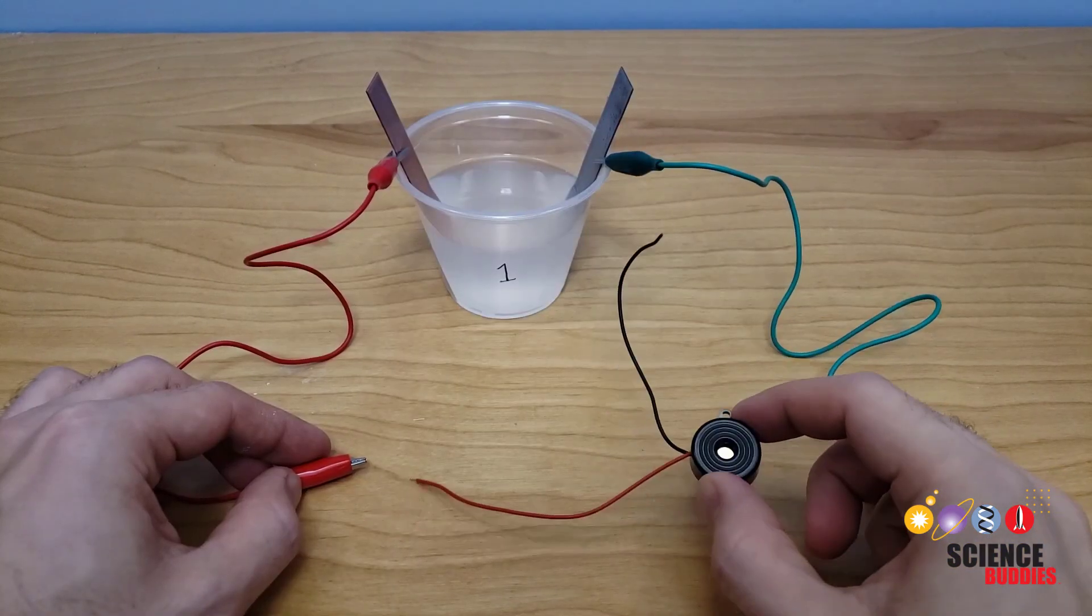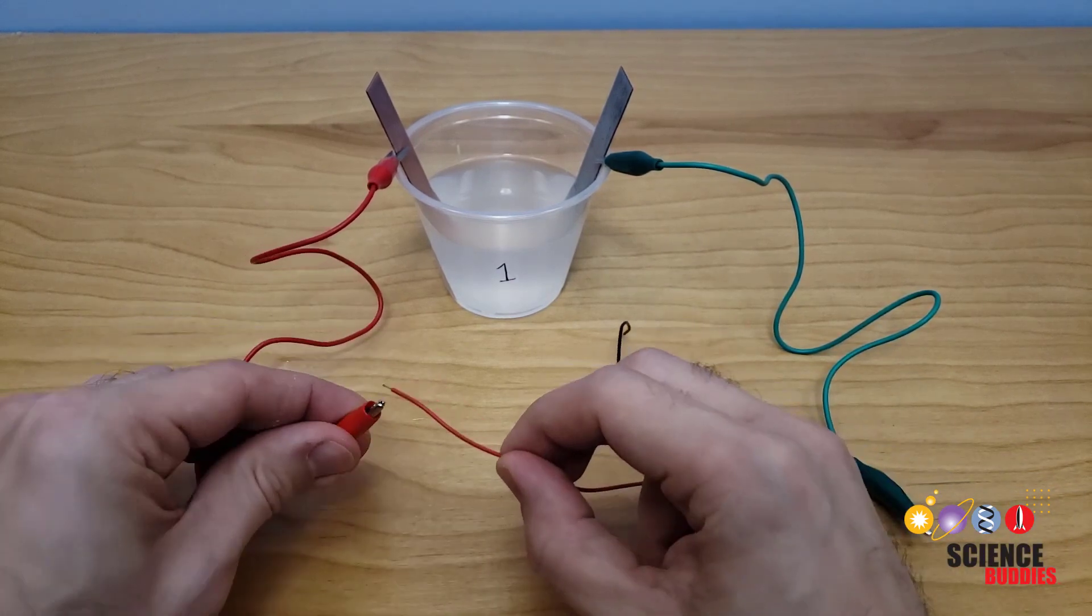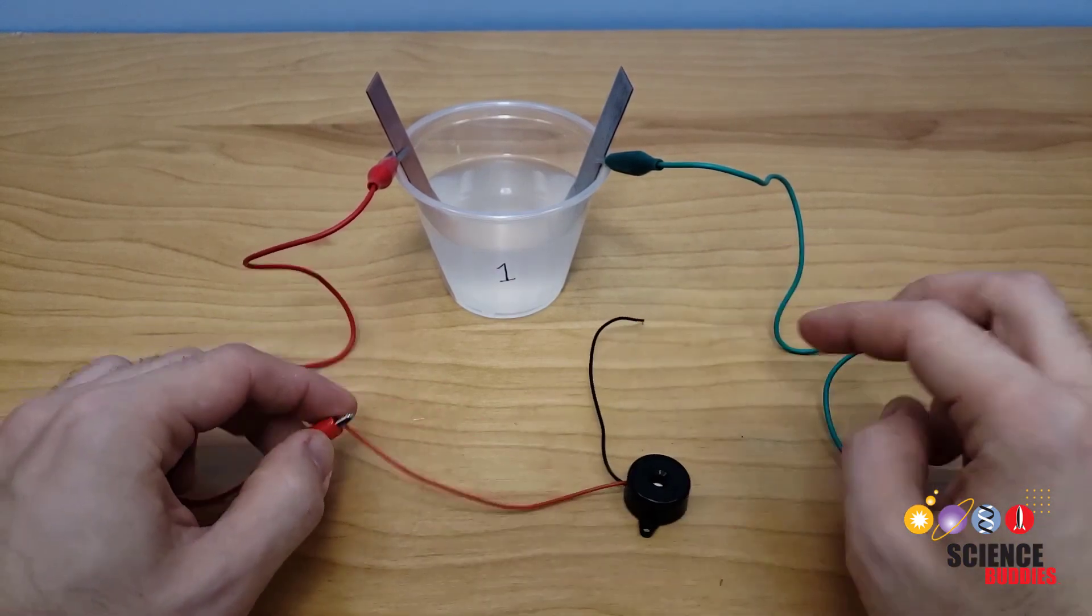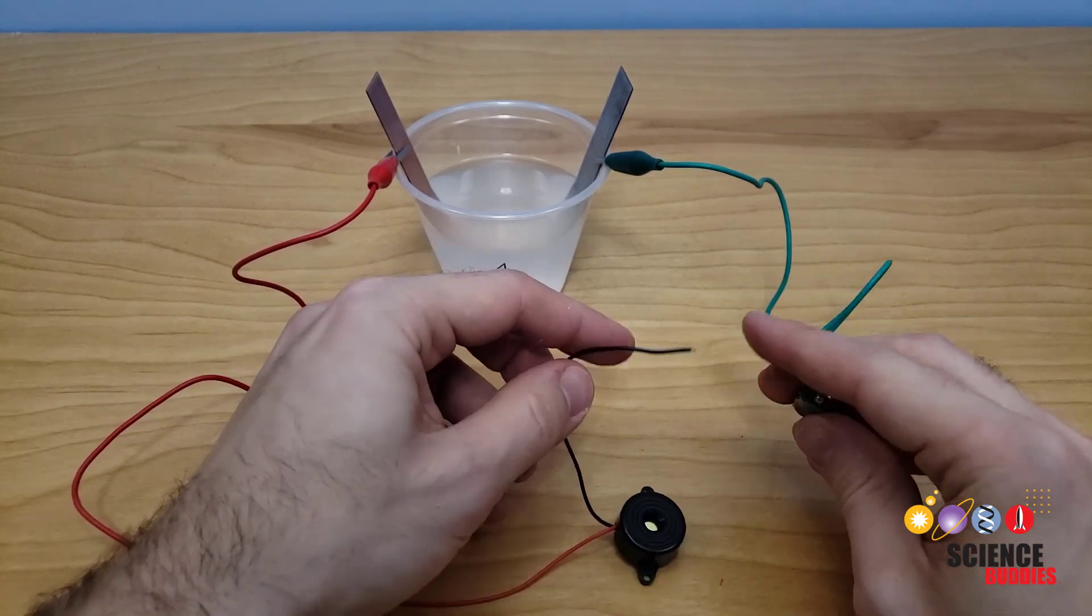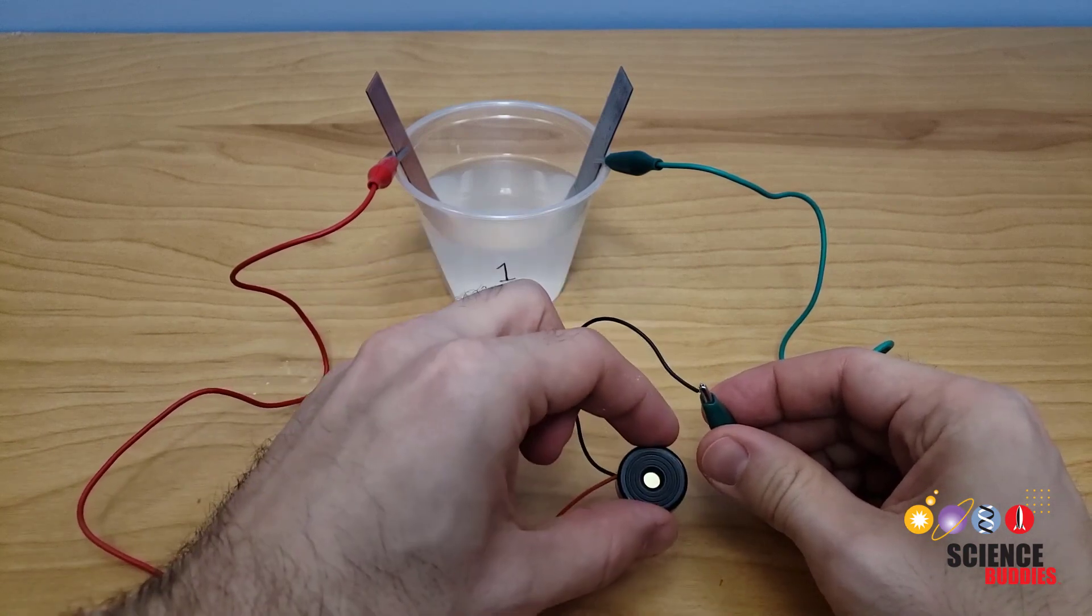You can now test if your saltwater battery is working by connecting it to the buzzer in your kit. Take the red alligator clip and connect it to the buzzer's positive or red wire. And take your green alligator clip and connect it to the buzzer's black or negative wire. You should hear a buzzing sound.